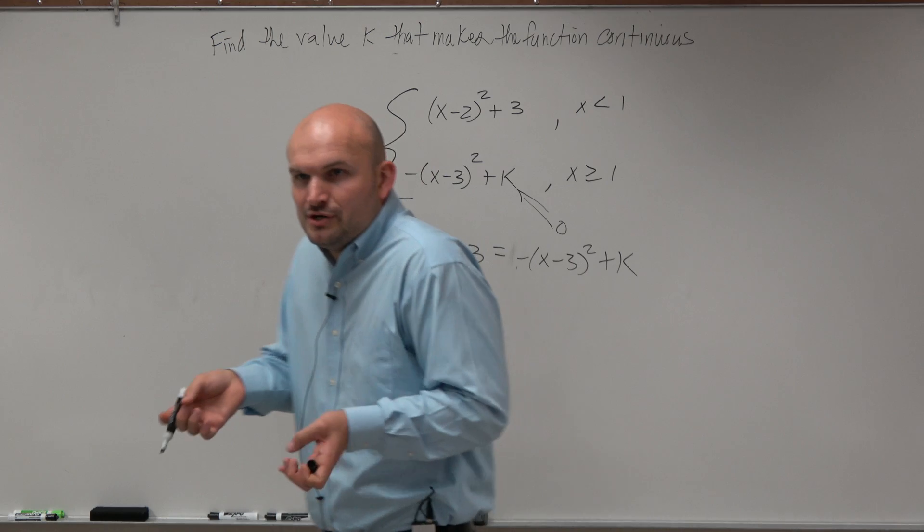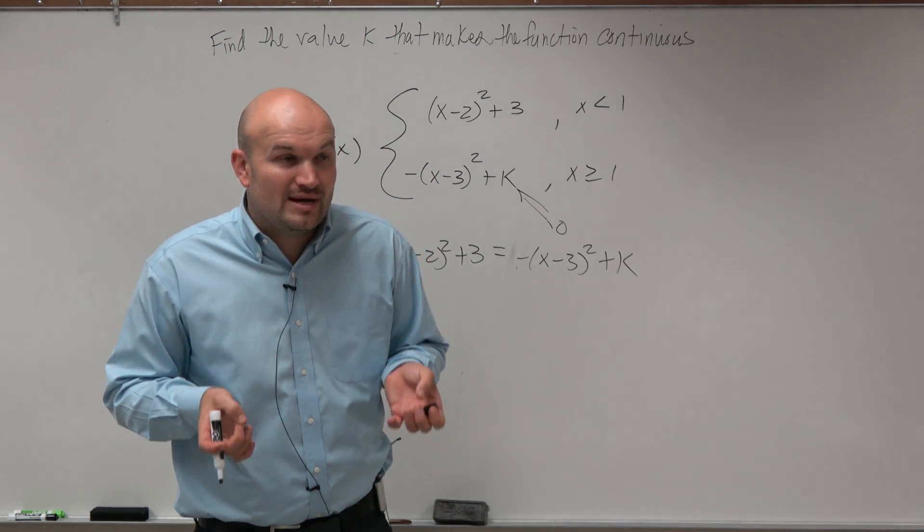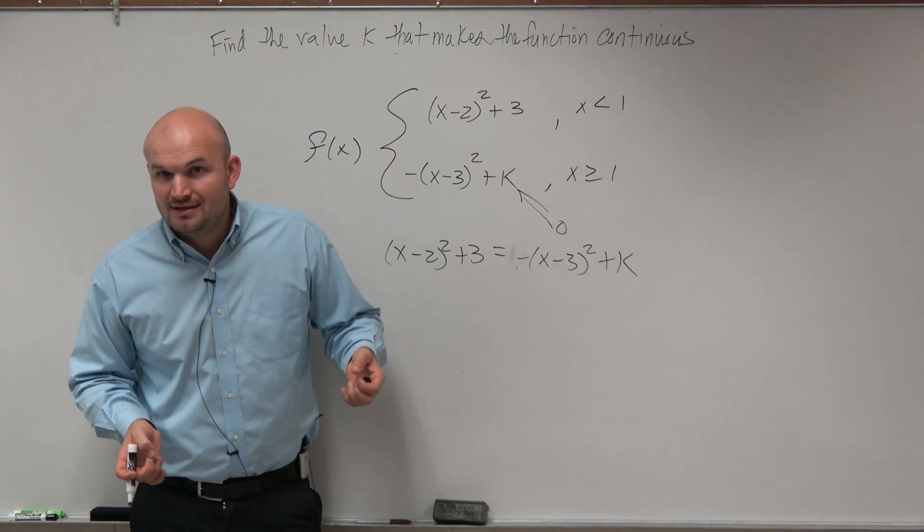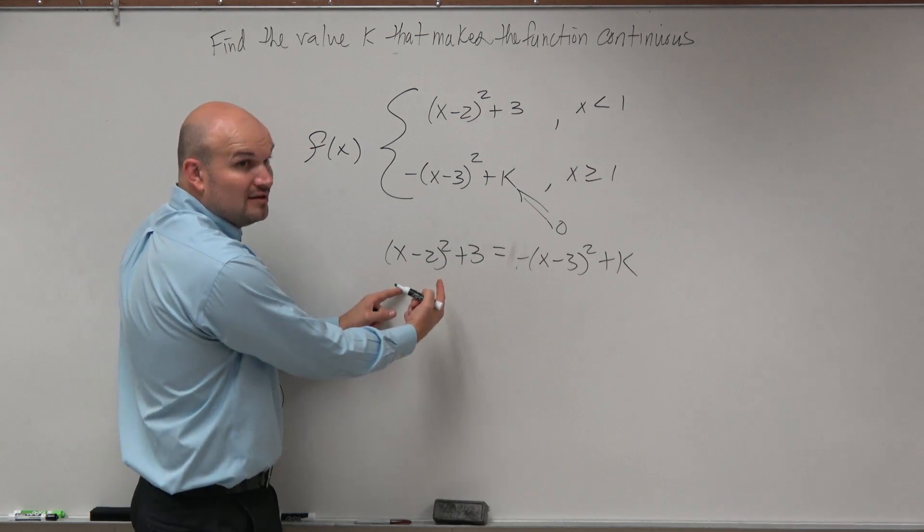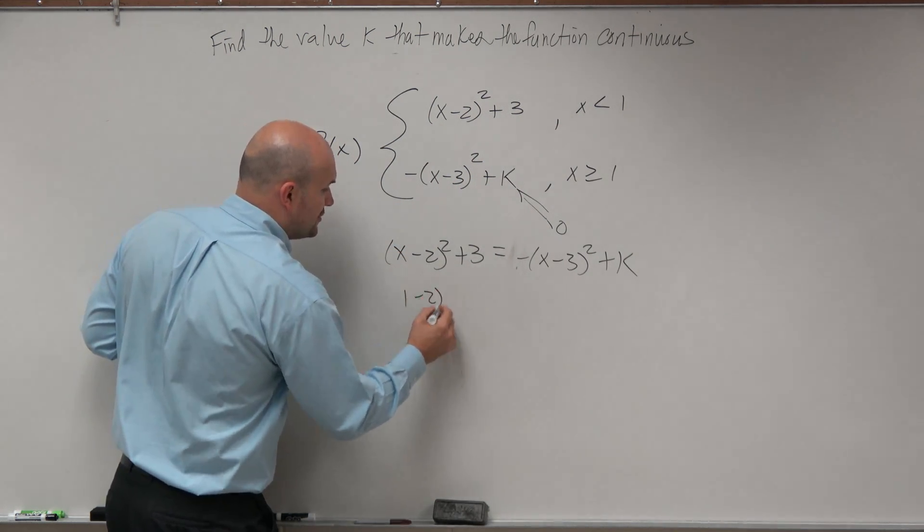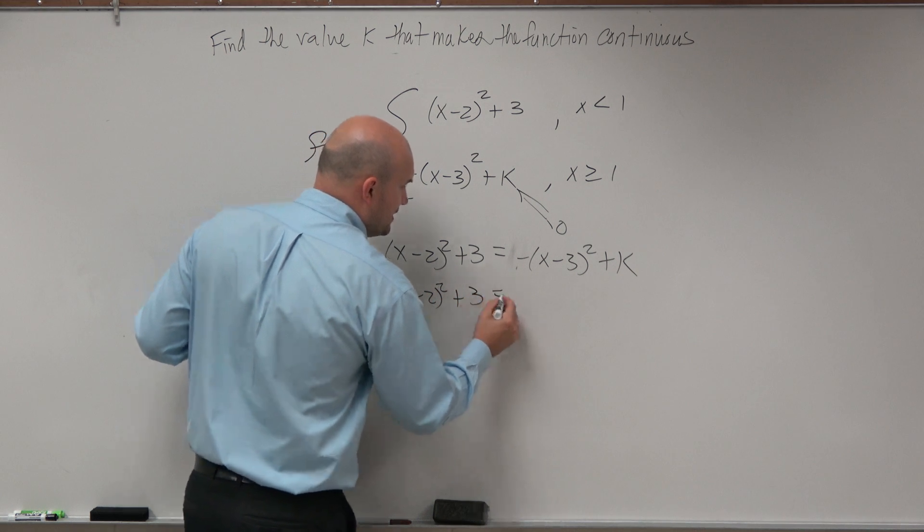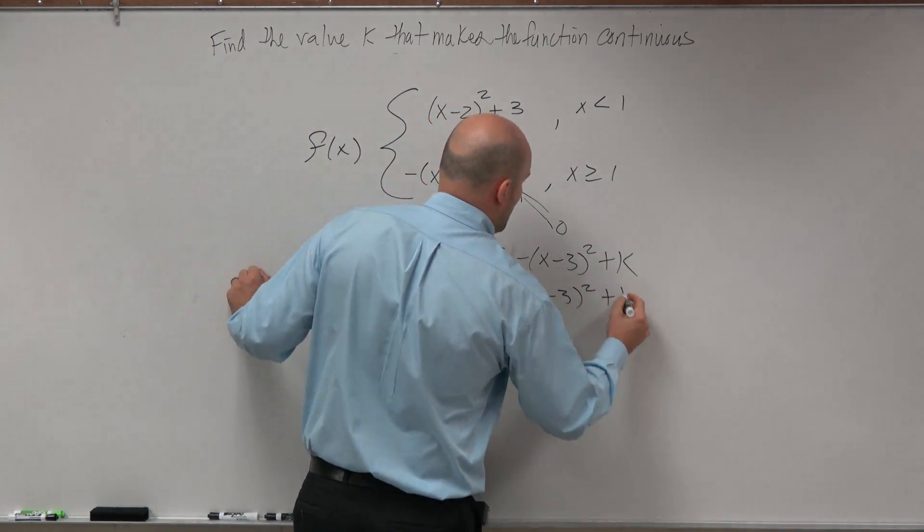But again, where do they have to be equal at? 1. When what equals 1? x. x equals 1. Do we have an x where we could plug 1 in for? Yes. So (1-2)² + 3 = -(1-3)² + k.